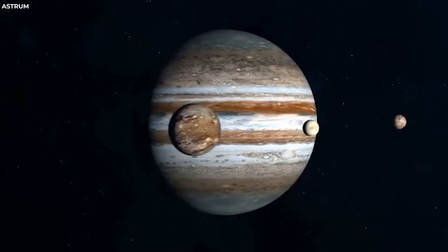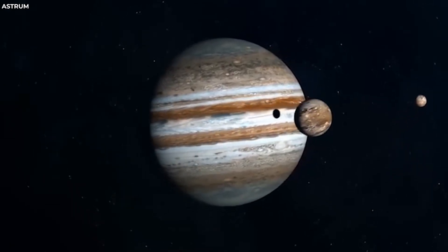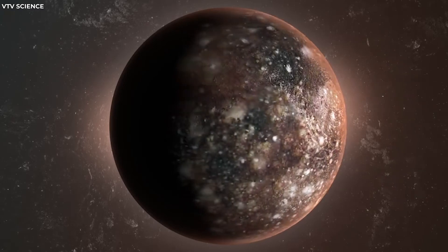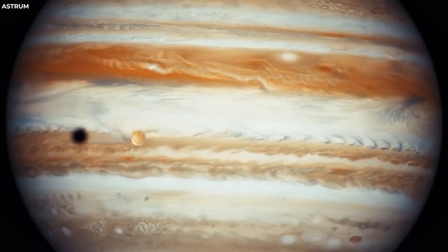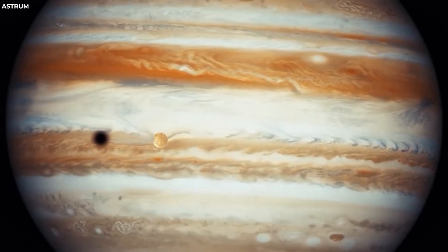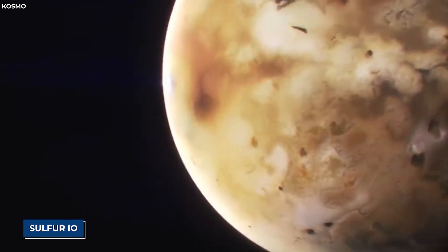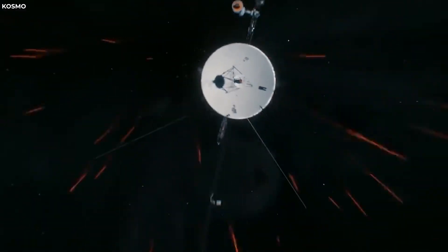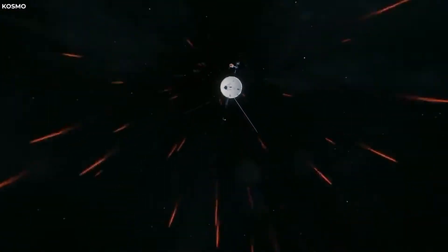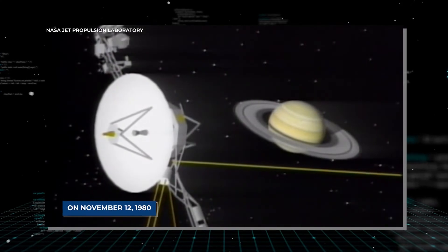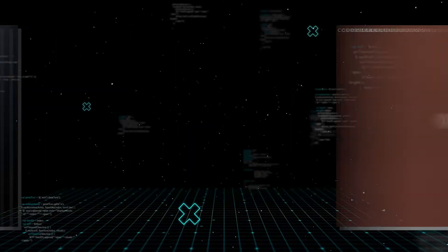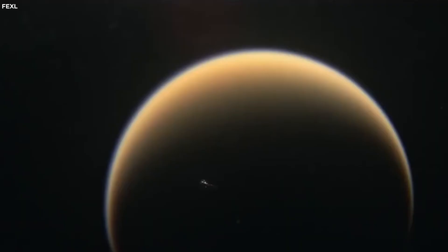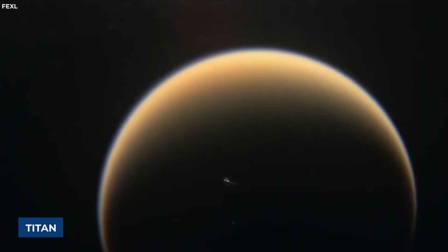It found that Callisto has an ancient and heavily cratered surface, indicating that it has not experienced much geological activity. It also found that Amalthea is oblong in shape and reddish in color, possibly due to sulfur from Io. After leaving Jupiter, Voyager 1 headed towards Saturn, its next destination. It arrived at Saturn on November 12, 1980, passing by the planet at a distance of about 77,000 miles or 124,000 kilometers.